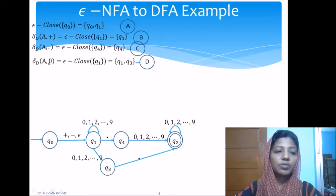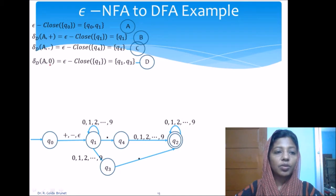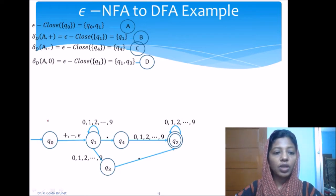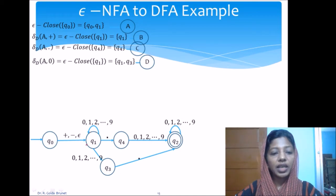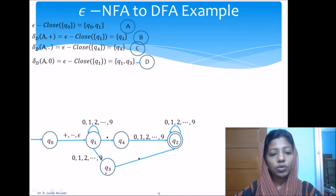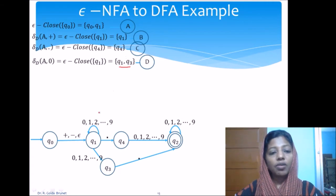The next input symbols are digits 0 through 9, all behaving the same. From A on any digit: from Q0 on a digit there is no transition (null); from Q1 on a digit we go to Q1 or Q3. So the union is {Q1, Q3}, and the epsilon closure of {Q1, Q3} is {Q1, Q3}. This is a new subset and will serve as a new state in the DFA, labeled state D.